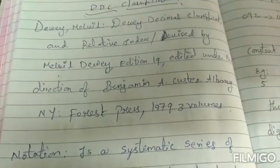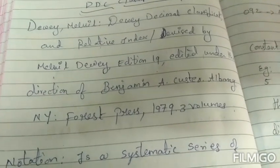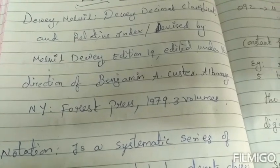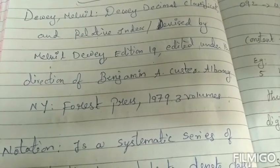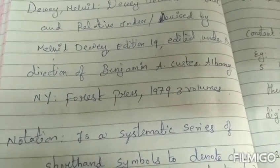How to go ahead with DDC classification. It's a relative index devised by Melville Dewey, edition 19, under the direction of Benjamin A. Custer in the years 1971 and 79.